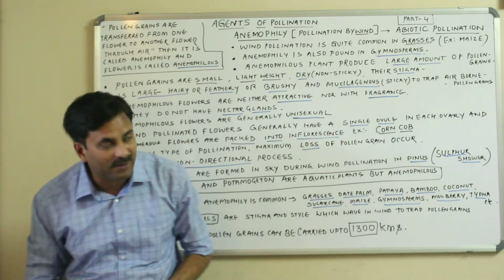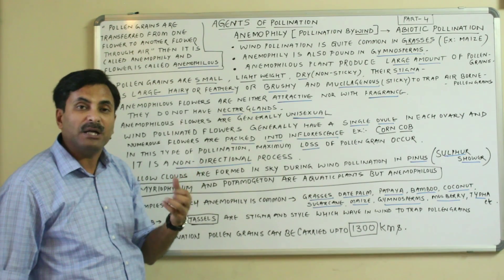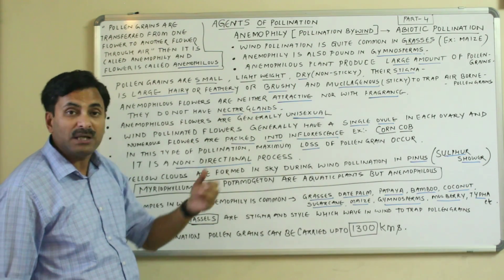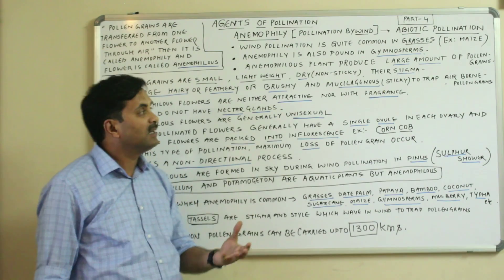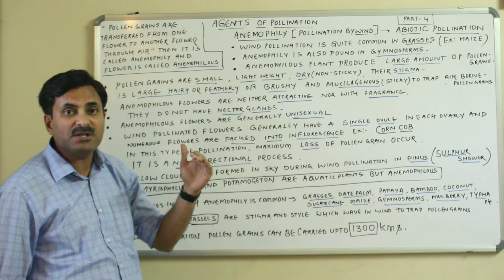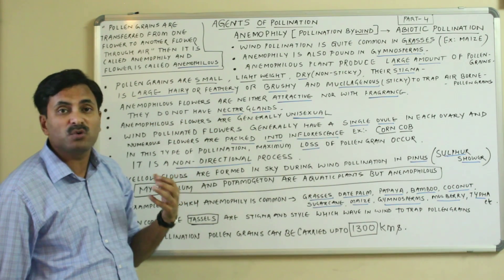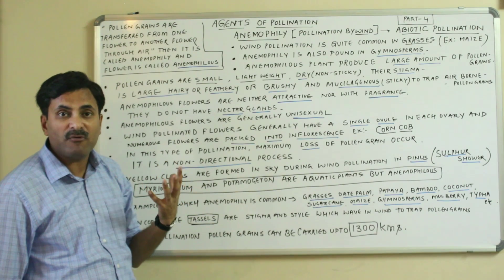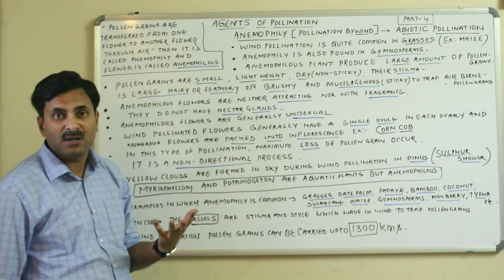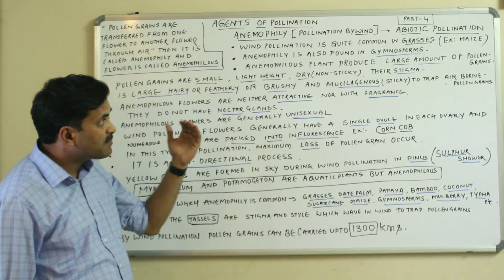Wind pollination is very common in angiosperms, particularly in grasses — for example, maize. Anemophily is also quite common in gymnosperms. Because the agency here is air, anemophilous plants produce a large amount of pollen grains. In this type of pollination, a large amount of pollen grains are lost before reaching their destination, so large amounts are produced to compensate for this loss.